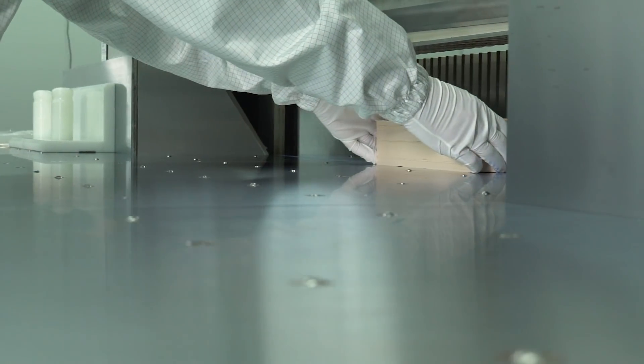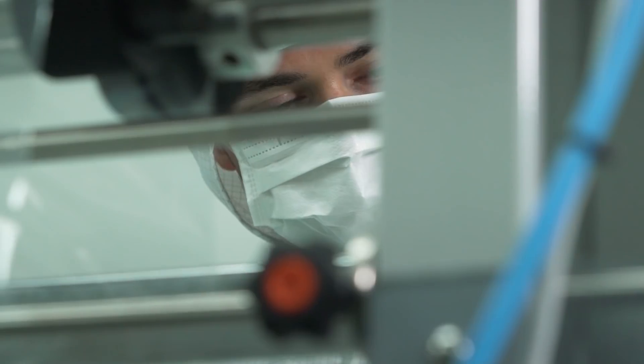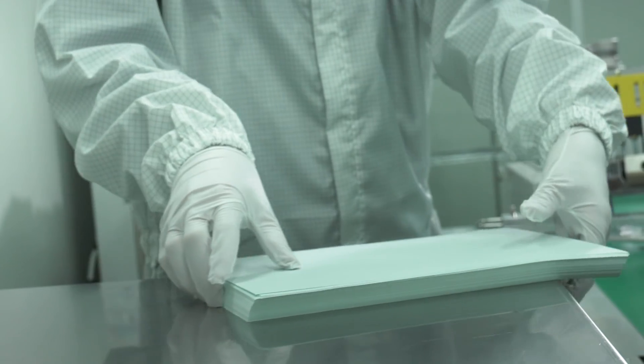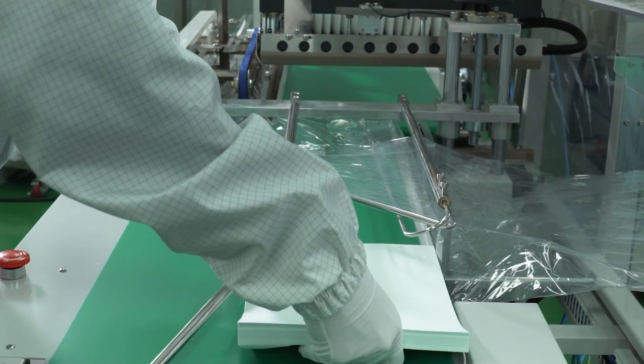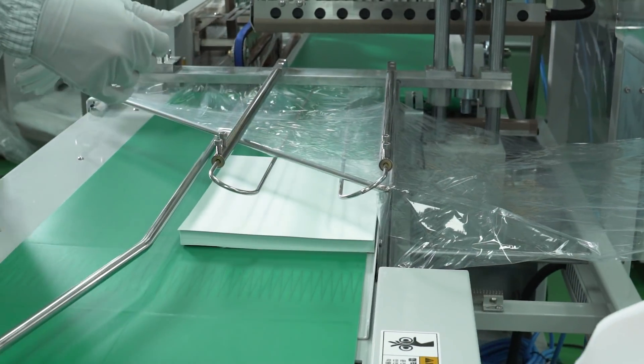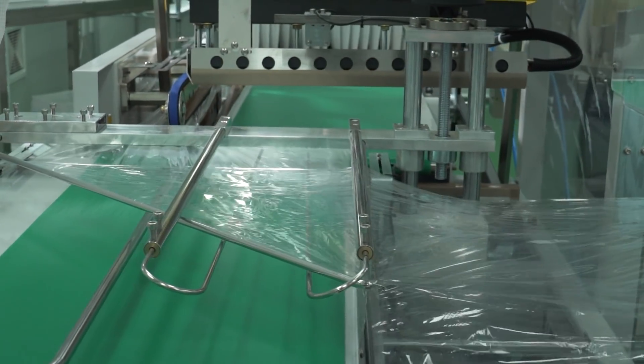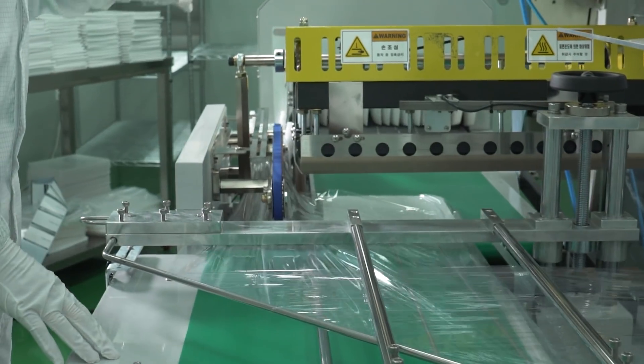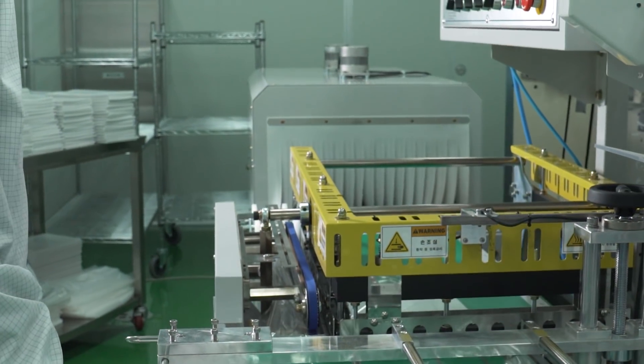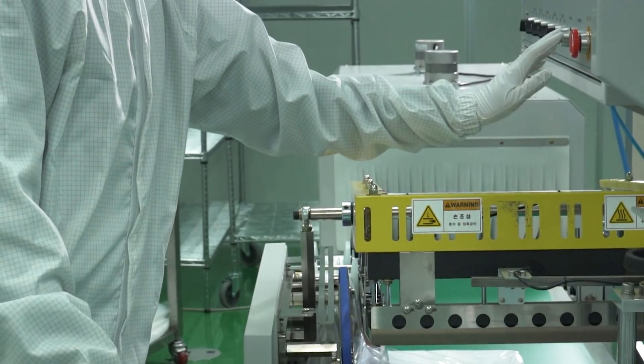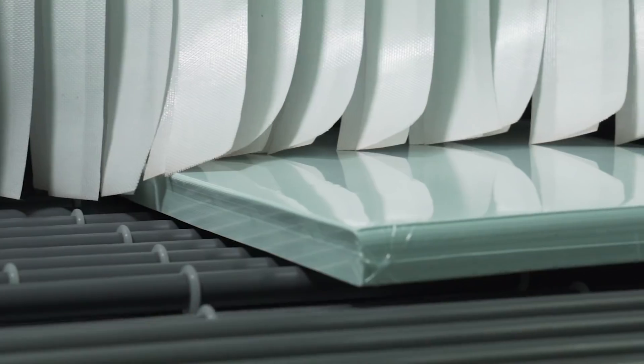Clean room paper, one of the most common consumables used in the clean room, is produced in a high-class clean room. When producing products that require the suppression of particle generation such as clean room paper, the particle control of the clean room paper itself is important, but various products should be used to minimize particle generation during the production process. The ion bar neutralizes static electricity that products and equipment might acquire in the clean room.